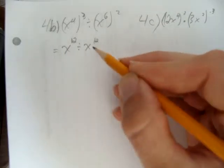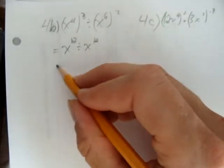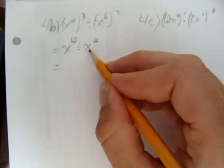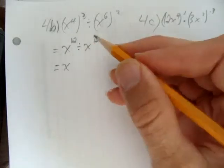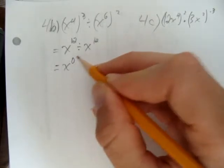So we're left with x to the power of 12 divided by x to the power of 12 and when you're dividing same base you just subtract the exponents. What's 12 take away 12?